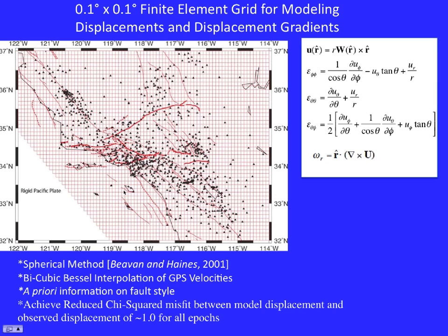In this fitting procedure, how do we regularize it? How do we achieve a smooth yet sufficiently sharp solution matching features? There's one adjustable parameter, like a damping parameter, and we adjust it until we achieve a reduced chi-squared misfit to all the displacements of around one.